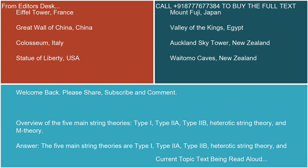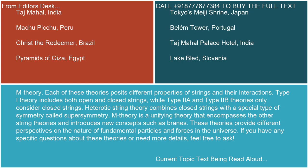The five main string theories are Type 1, Type IIA, Type IIB, Heterotic String Theory, and M-Theory. Each of these theories posits different properties of strings and their interactions.